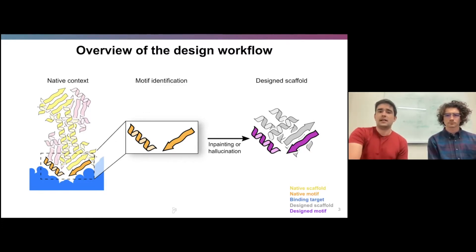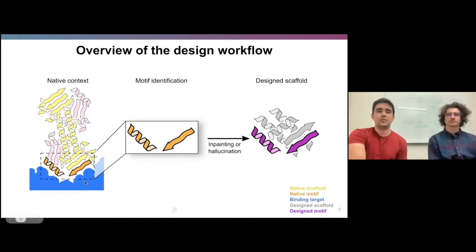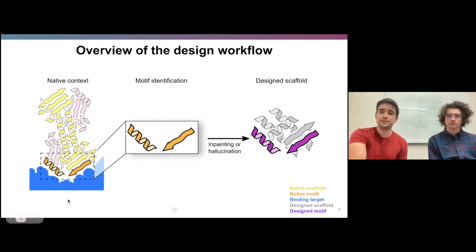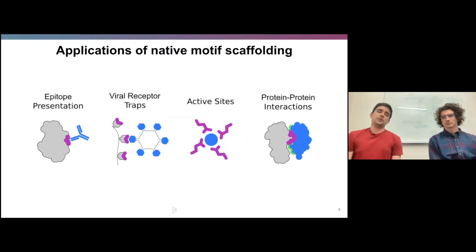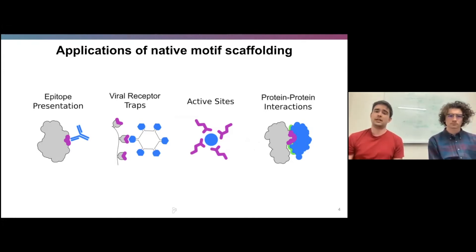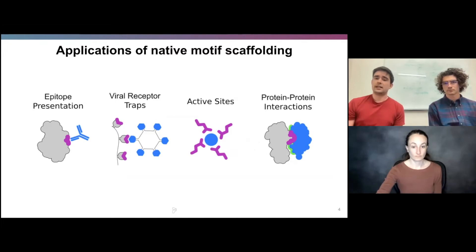As an overview of the workflow we'll be talking about today, our design process looks something like this. We take a structure with a known functional motif — in this case some native protein binding a target protein in blue — identify the structural components that comprise that functional motif, and then use one of the two design methods we'll talk about today, inpainting or hallucination, to build a custom scaffold for that motif. Scaffolding native motifs lends itself to four design cases: epitope presentation for focused vaccine development, viral receptor traps, active sites and metal binding sites, as well as binding or protein-protein interaction interfaces.